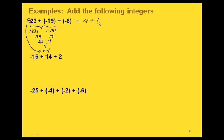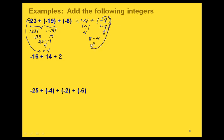So now we have 4 plus negative 8. Again, when we look at these two, we have two different signs. Our absolute values are 4 and 8. The 8 is the larger of these two, so we take 8 minus 4, which gives us 4. Then we take the sign that went with the 8, which was a negative. So we end up with negative 4.